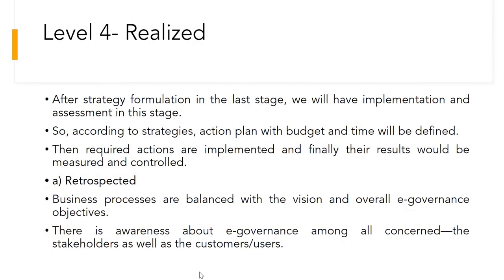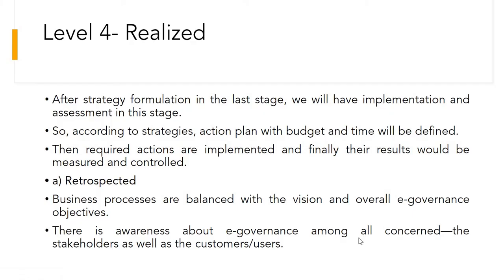The next stage is Realized — this is the implementation stage. After all the strategies and planning are done, we implement the model. According to the strategies, an action plan with budget and time will be defined — how much money and time is needed. Then the required actions are implemented and finally their results are measured and controlled. Under the Realized stage, in the retrospective substage, business processes are balanced with the vision and overall E-Governance objectives, and there is awareness about E-Governance among all the concerned stakeholders.